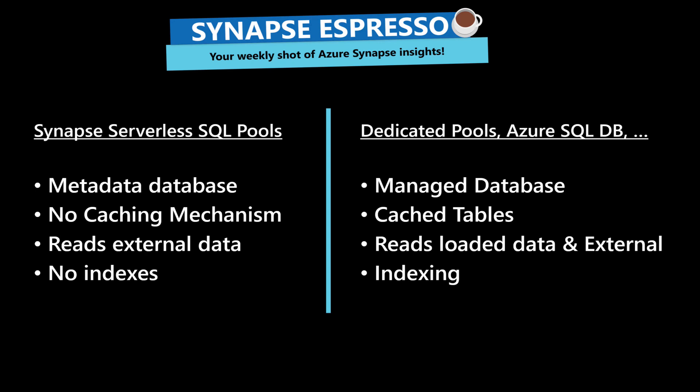Dedicated SQL pools and Azure SQL DB read loaded data — data that you're loading into there or that your applications are writing into those databases — but they can also access external tables, for example to storage. What you notice is that Serverless SQL pools is really, really focused on that external data and is very fast with it, while Dedicated SQL pools and Azure SQL DB are a bit slower when it comes to reading an external table.